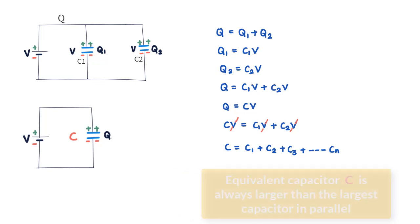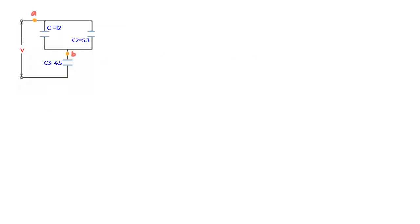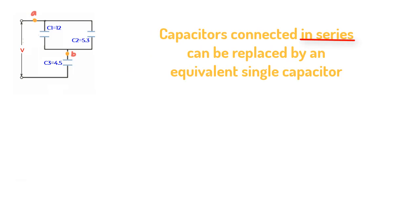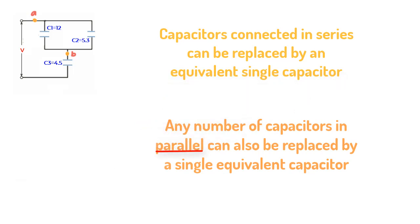In parallel, the equivalent capacitor value is always larger than the largest individual capacitor in the network. Now let us attempt a question with capacitors laid in both parallel and series, with a potential difference V applied across the network. The approach is to remember that capacitors in series can be replaced by a single equivalent capacitor, and likewise capacitors in parallel can also be replaced by a single equivalent capacitor. It is a matter of establishing which ones are in series and which are in parallel.